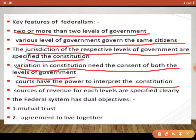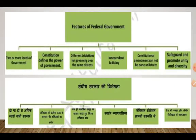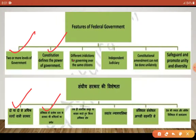Federal system के अंदर two objectives होते हैं: first, mutual trust होता है उनके बीच में, और साथ रहने का एक agreement होता है। यह आपकी worksheet की photo है — जो मैंने as it is Hindi और English दोनों में paste की है। Features हैं: two or more levels of government, constitution defines the power of government, different jurisdiction for governing over the same citizens — और हमारी judiciary स्वतंत्र यानि independent होती है, वो किसी government के अंडर नहीं आती, उसके decisions free and fair होते हैं।